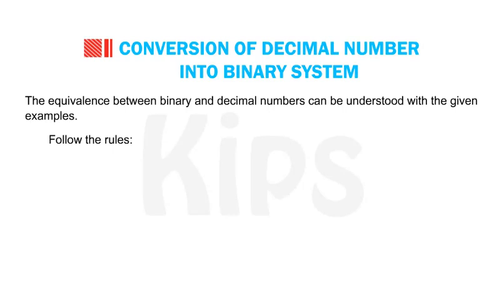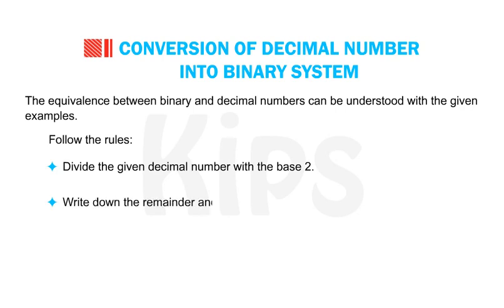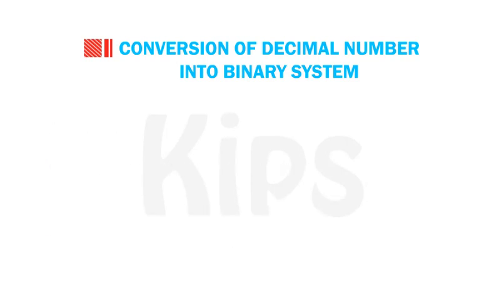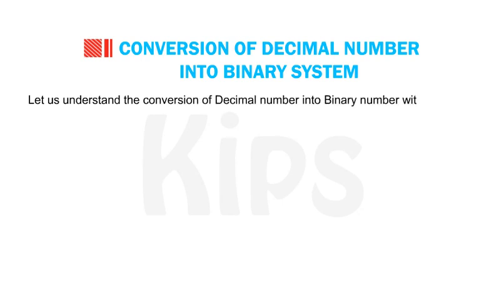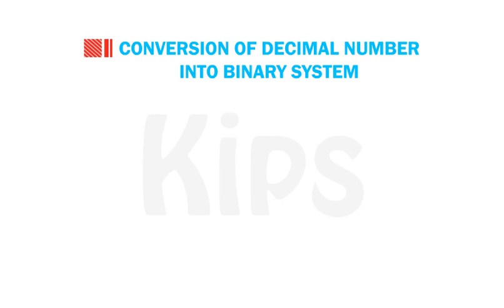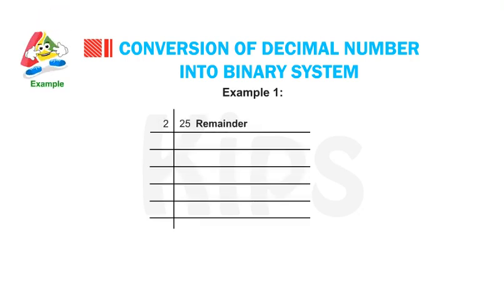The rules to be followed are: divide the given decimal number by the base 2, write down the remainder, and divide the quotient again by 2. Repeat this step until the quotient is 0. Let us understand the conversion of a decimal number into a binary number with the given examples.